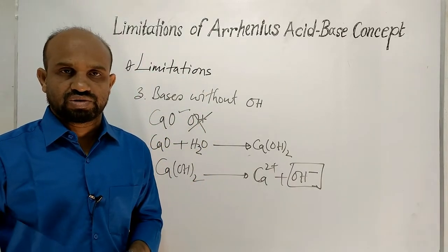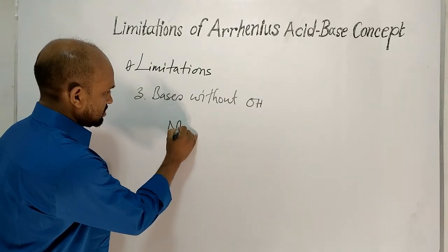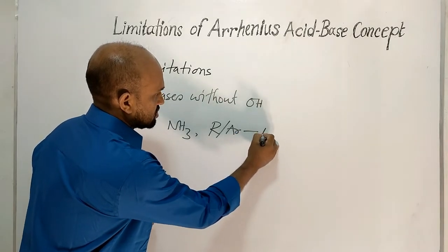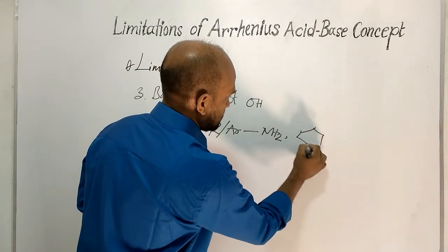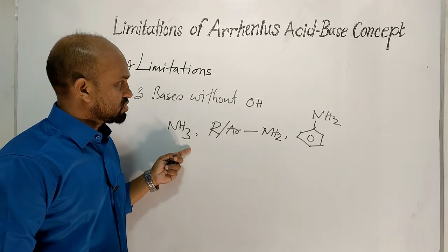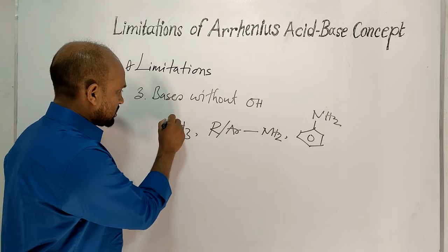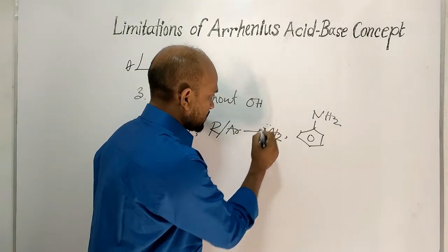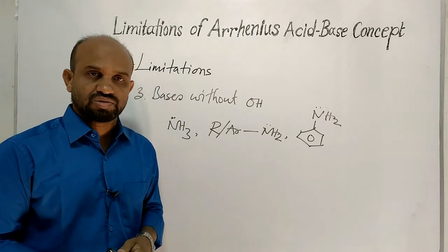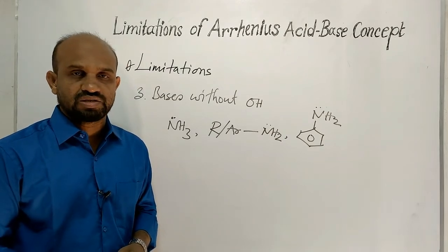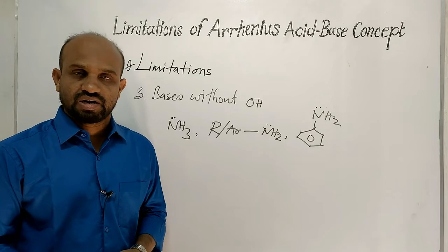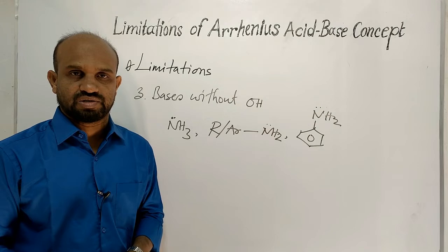Some more compounds that are basic without an OH group include ammonia, amines (alkyl or aryl groups connected with an amino group), and aniline. These compounds are basic in nature though they do not have an OH group. The nitrogen in these compounds contains one lone pair of electrons, and because of this lone pair, these compounds act as bases — specifically Lewis bases. So these compounds do not support the Arrhenius concept, which is a limitation.